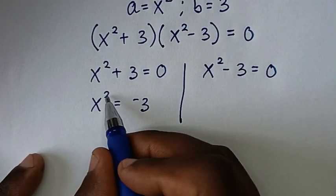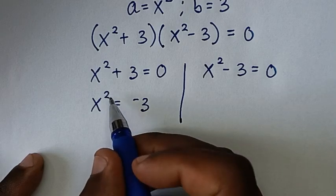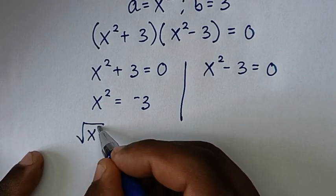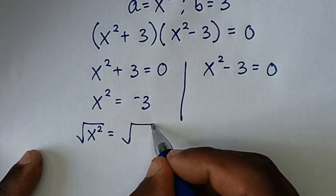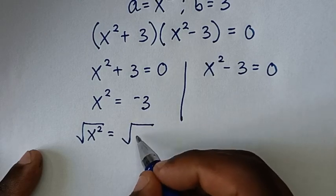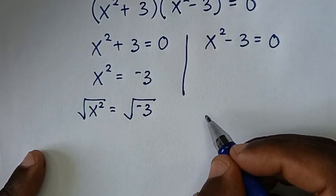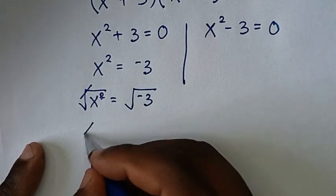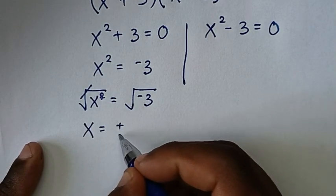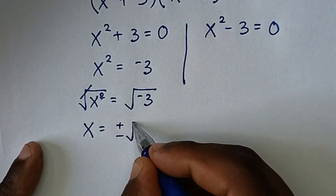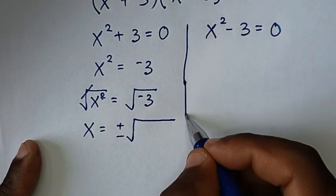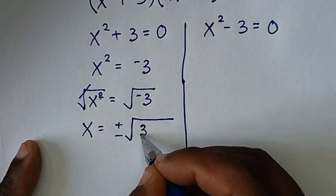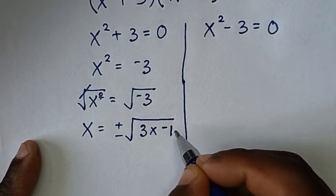To remove the square, we apply square root to both sides: √(x²) = √(−3). This gives x = ±√(−3), and negative 3 is the same as 3 times negative 1.